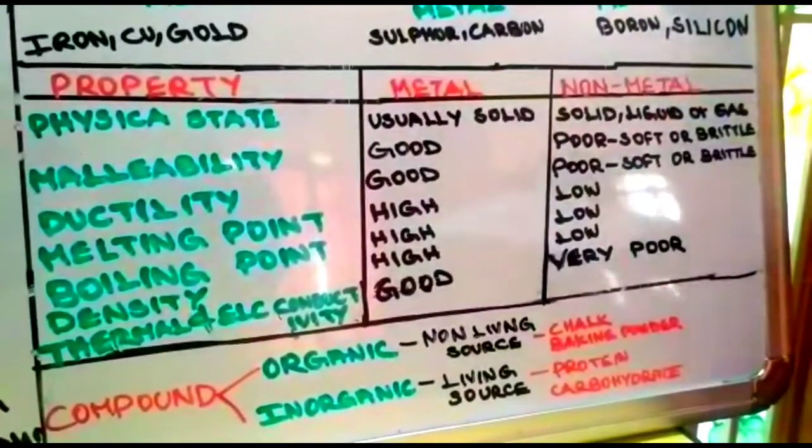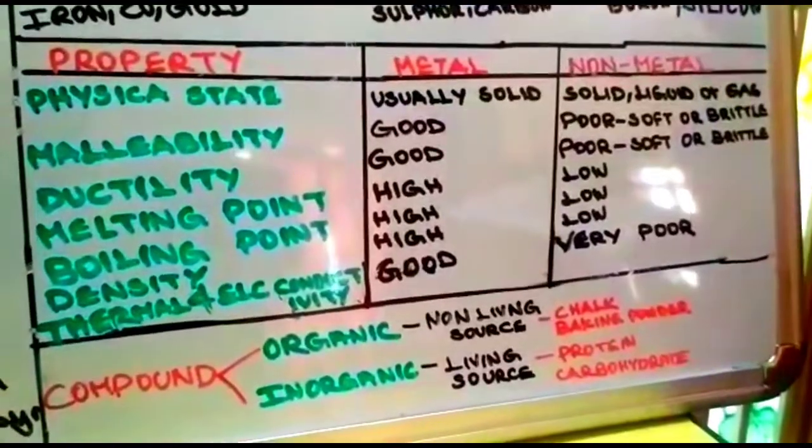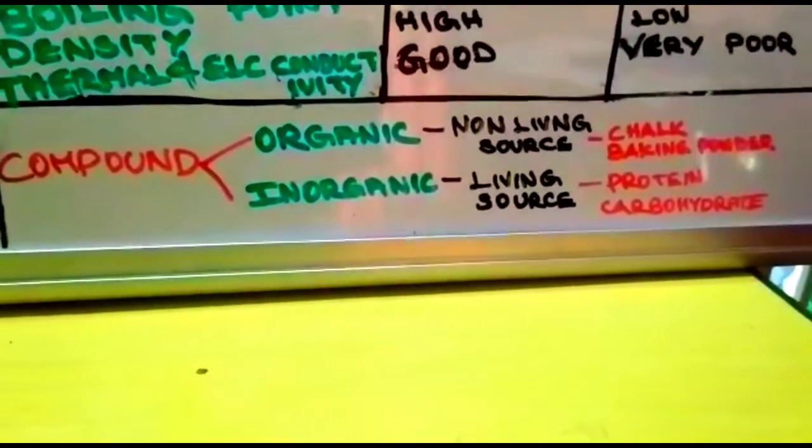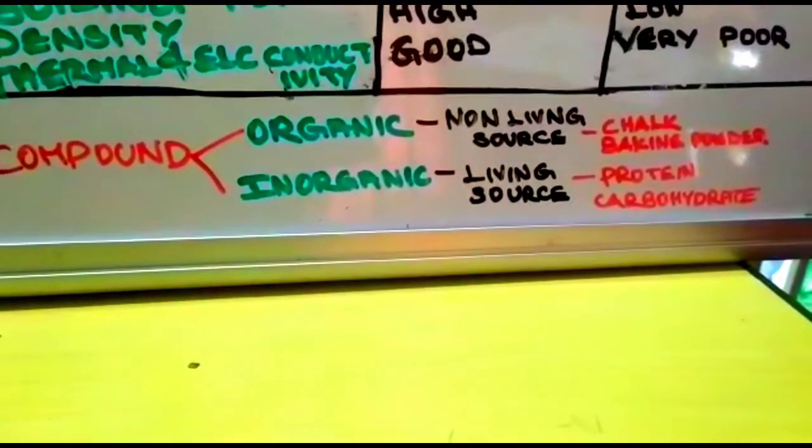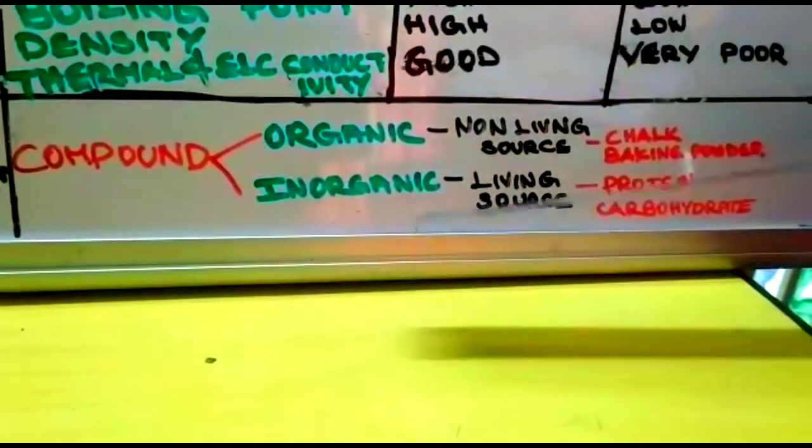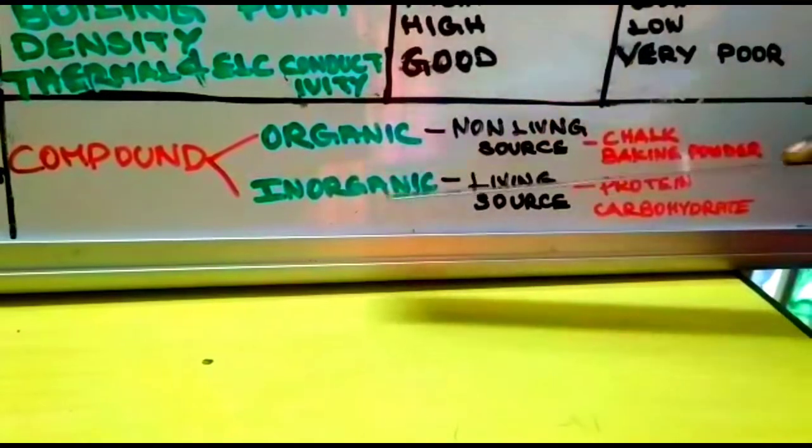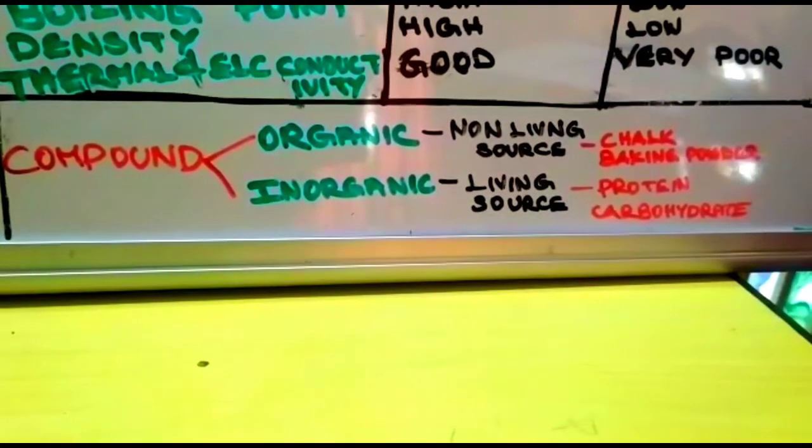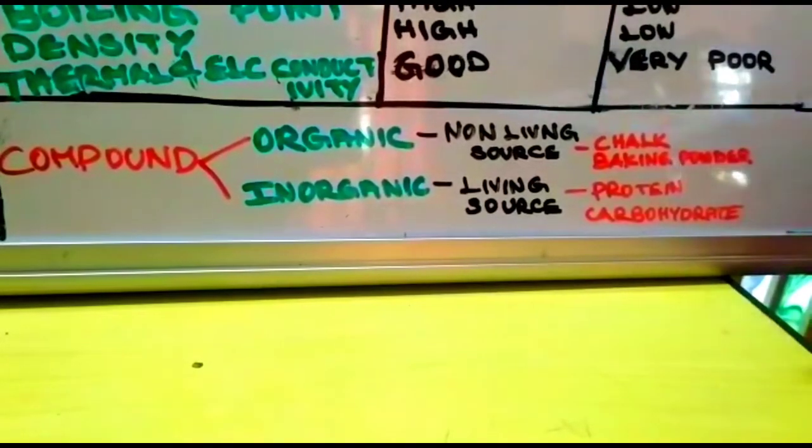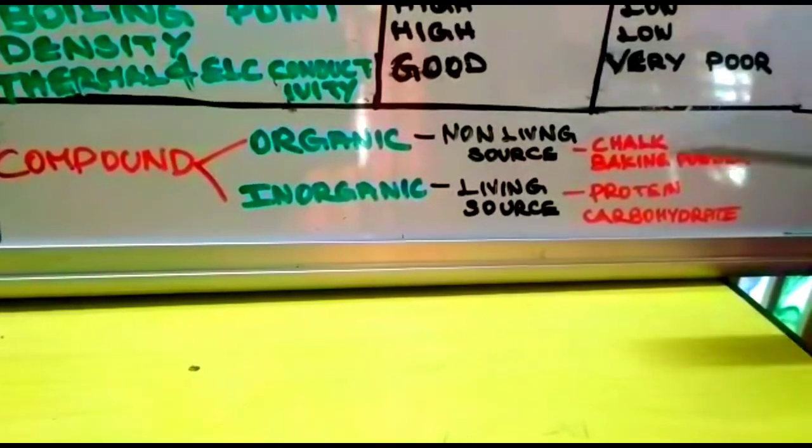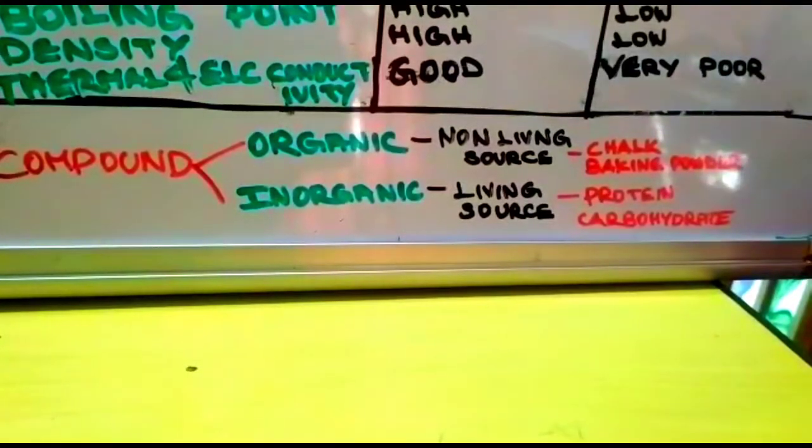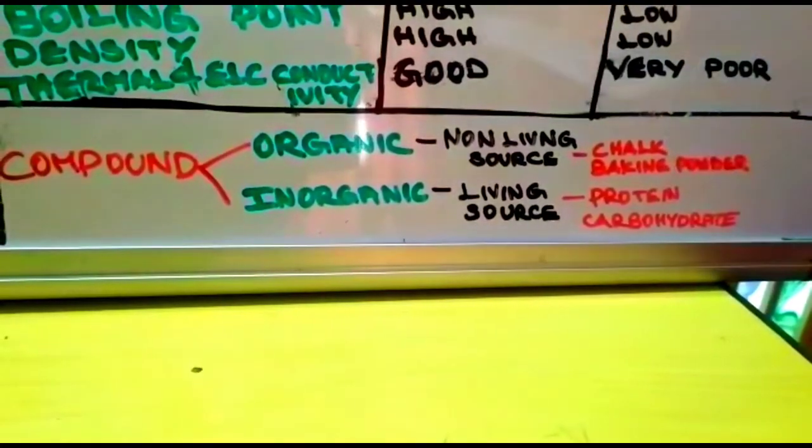Next, we will see what is a compound. Compound is a pure substance formed due to the chemical combination of two or more elements in a fixed ratio. For example, water is a compound. Compound is of two different types: organic compound and inorganic compound. Organic compound is obtained from non-living sources like chalk and baking powder. Whereas inorganic compound is obtained from living sources like plants and animals. Examples include protein and carbohydrates.